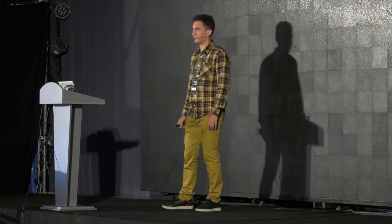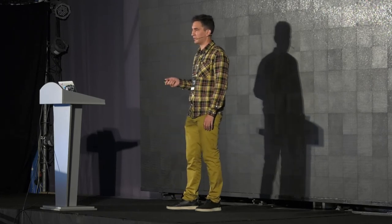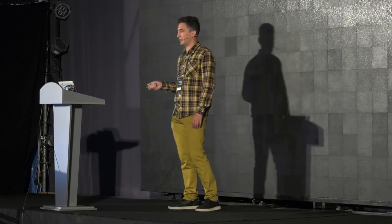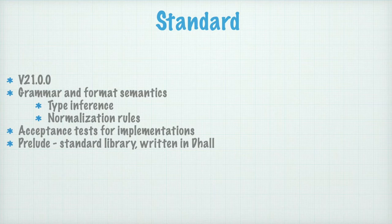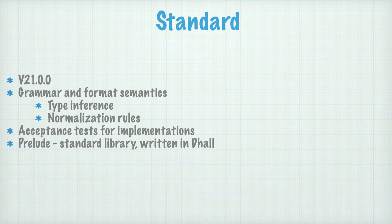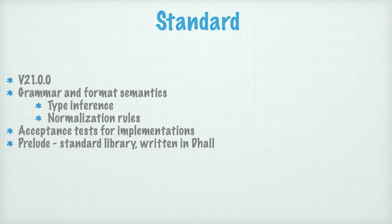So what is Dhall? First of all, Dhall is a standard. This standard is released under BSD license version 3, and it already has version 21 — the first version was released just three years ago, so this standard evolves at a fast pace. The standard contains a definition of a grammar, formal semantics, and a full description of the language, which is very precise and very well written. In addition to the description, it contains acceptance tests for any implementation.